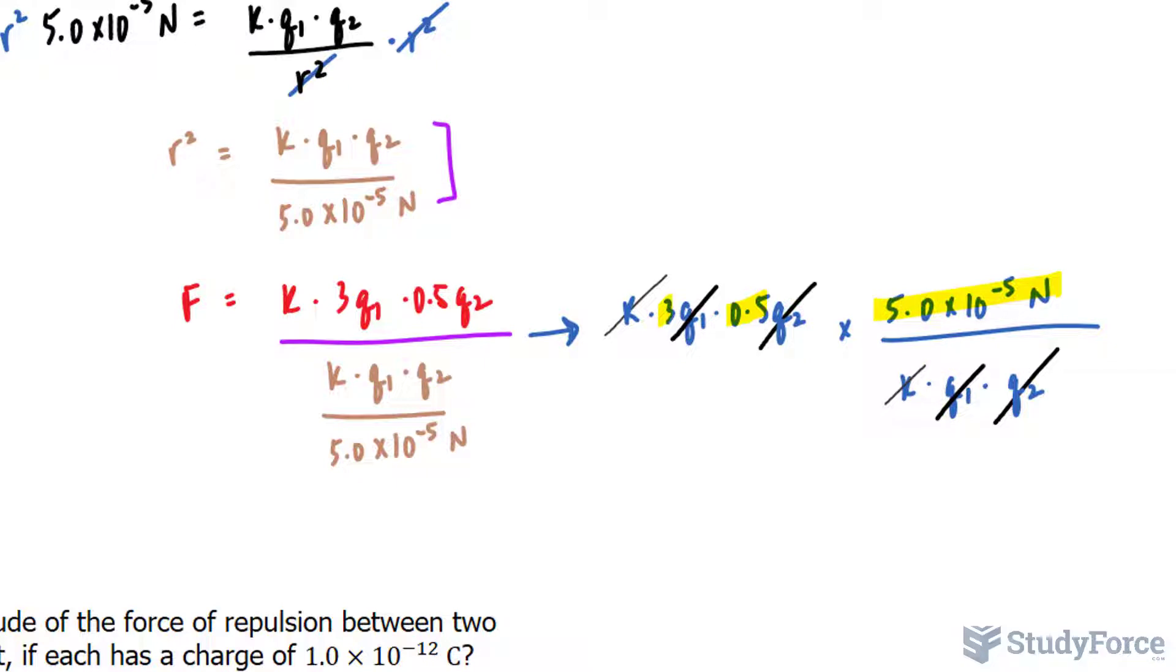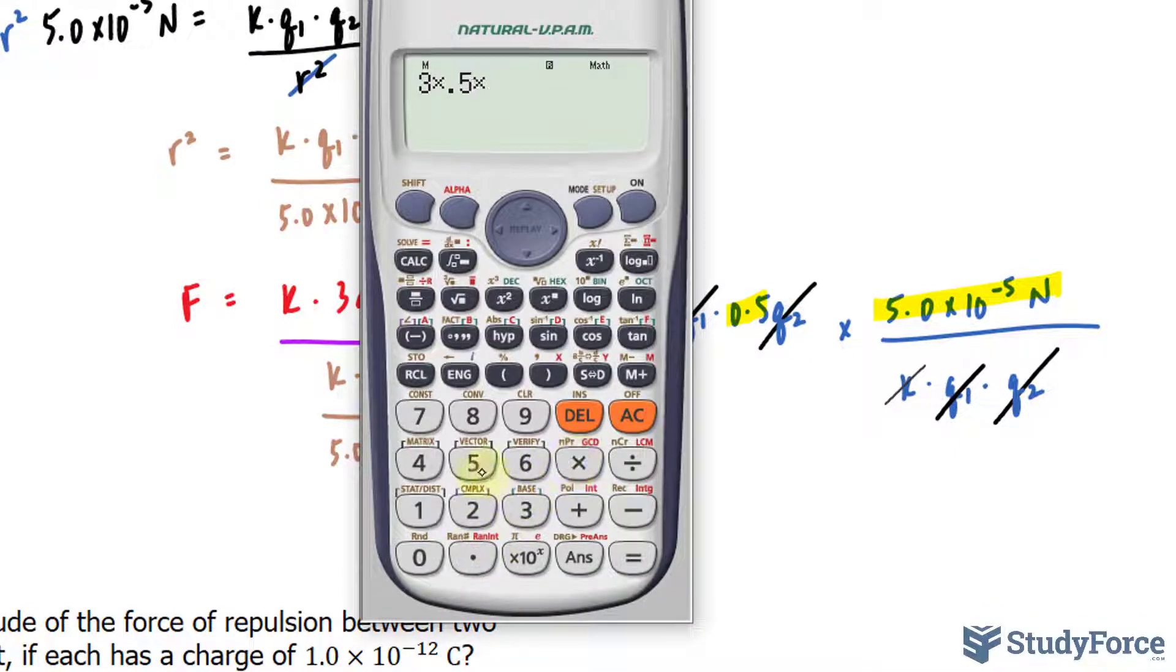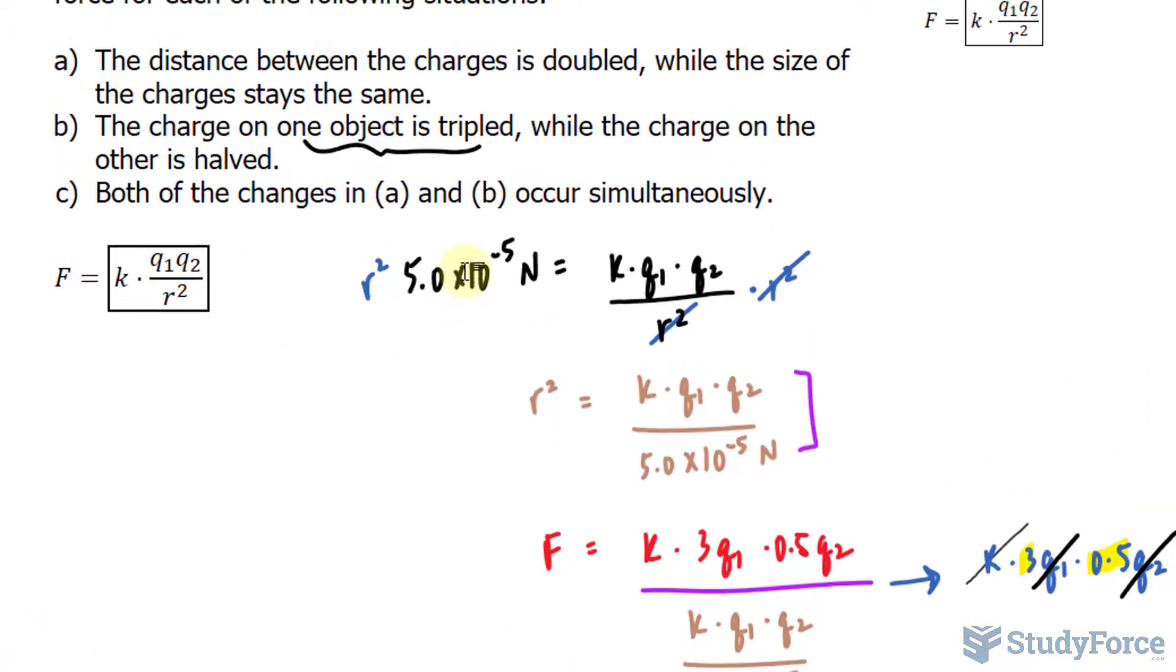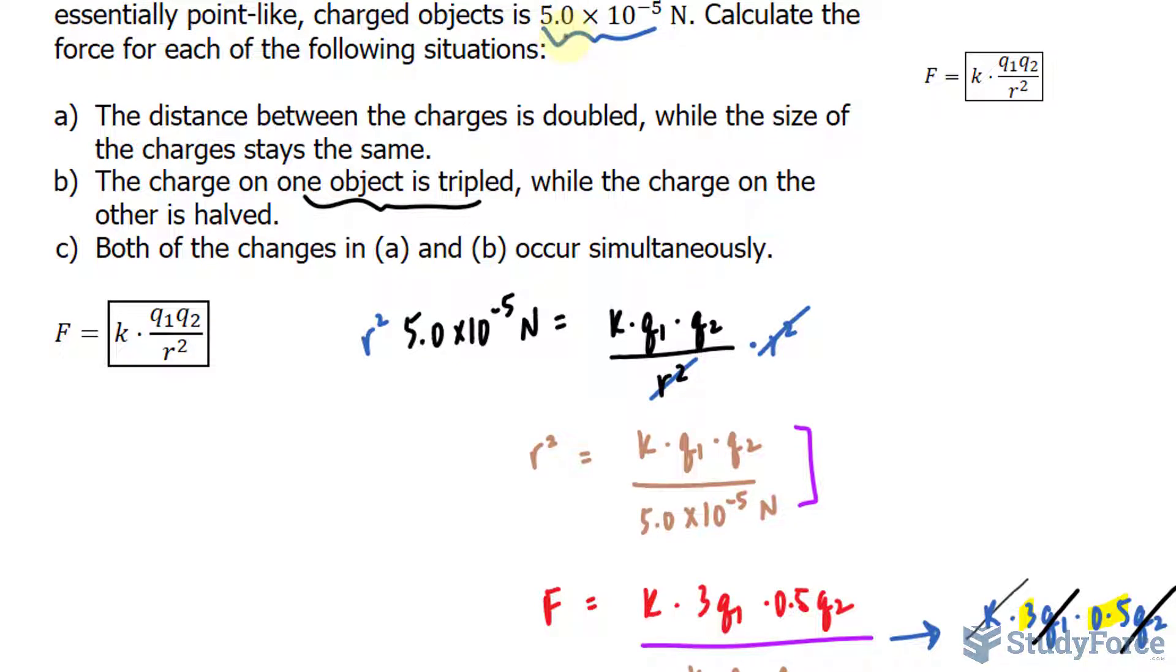And by calculating 3 times 0.5 times that, you will find out the force as a result of tripling q sub 1 and halving q sub 2. So, let's use our calculator. 3 times 0.5 times 5.0 times 10 to the power of negative 5. And this gives us a force of 7.5 times 10 to the power of negative 5 newtons. So to put this in perspective, when the charge of one object is tripled and the other one is halved, then the force will increase to 7.5 times 10 to the power of negative 5.